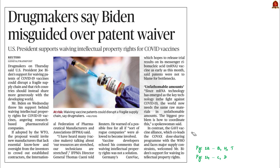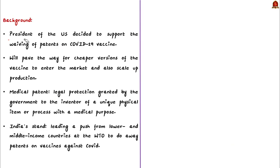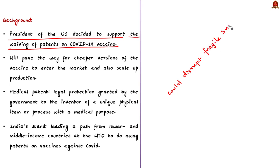This brings us to the discussion on patents, TRIPS, and related issues — which also has an ethical dimension that could be a potential ethics question. We will understand the issue and the ethical perspective from both the patent holder's and the humanitarian point of view. Recently, the president of the US decided to support the waiving of patents on COVID-19 vaccines. A group of drug makers argued that waiving patents could disrupt a fragile supply chain. Doing away with intellectual property rights (IPR) will pave the way for cheaper versions of the vaccine to enter the market and scale up production.